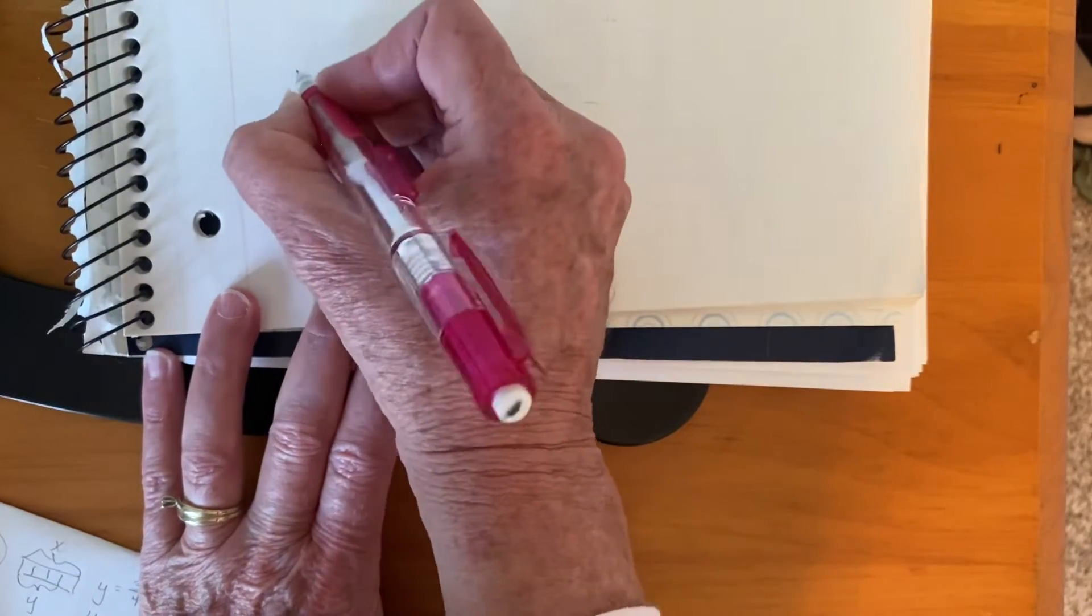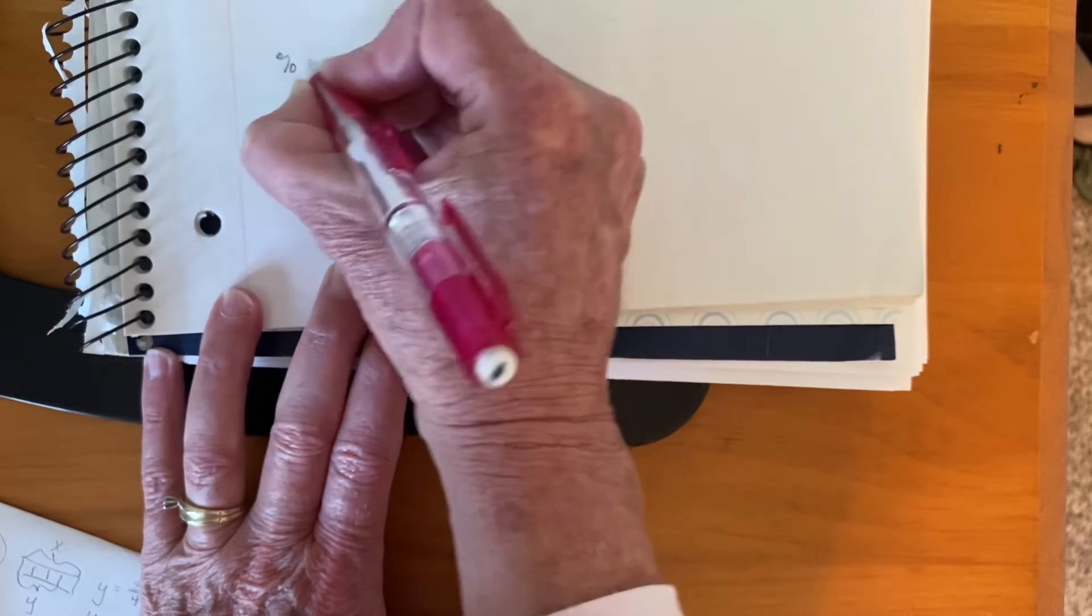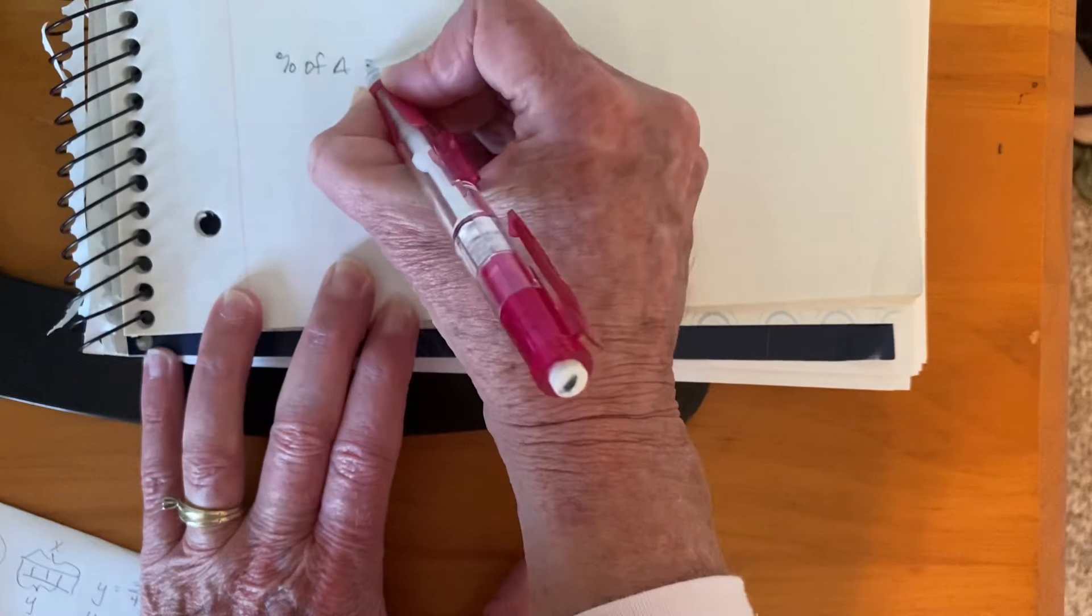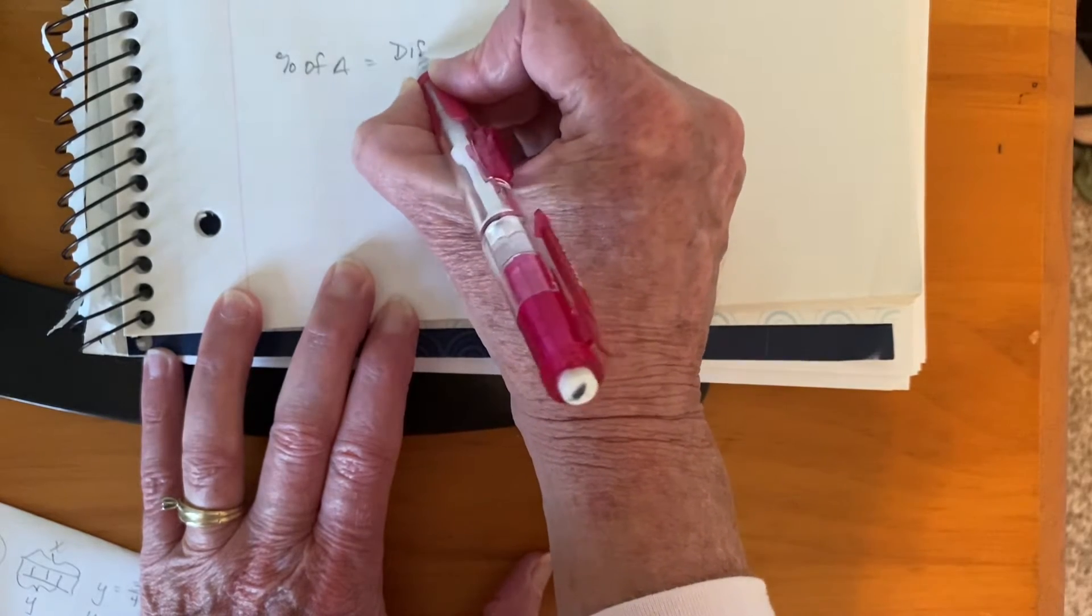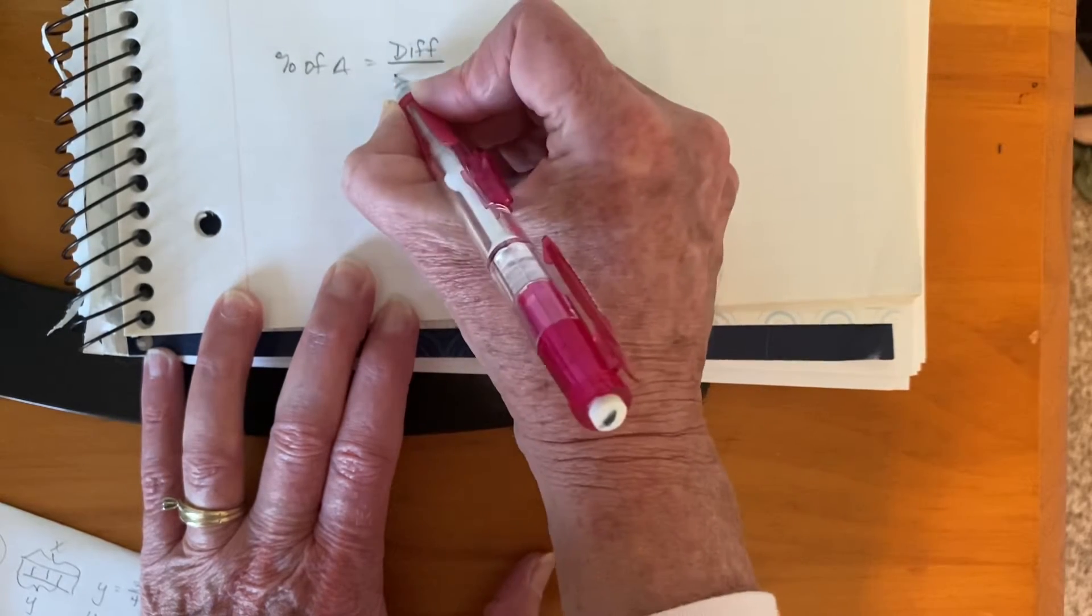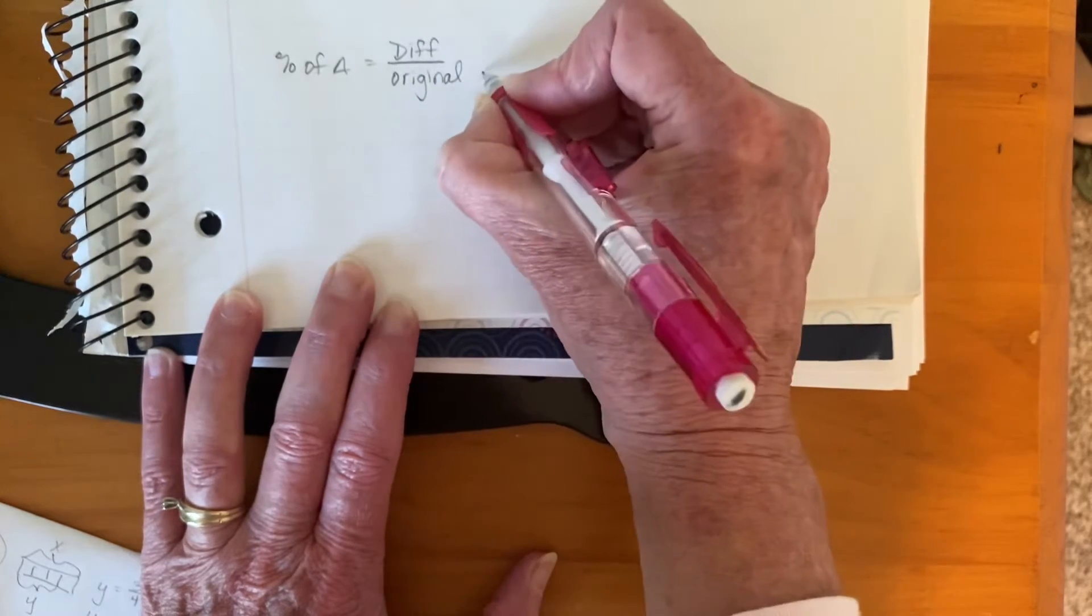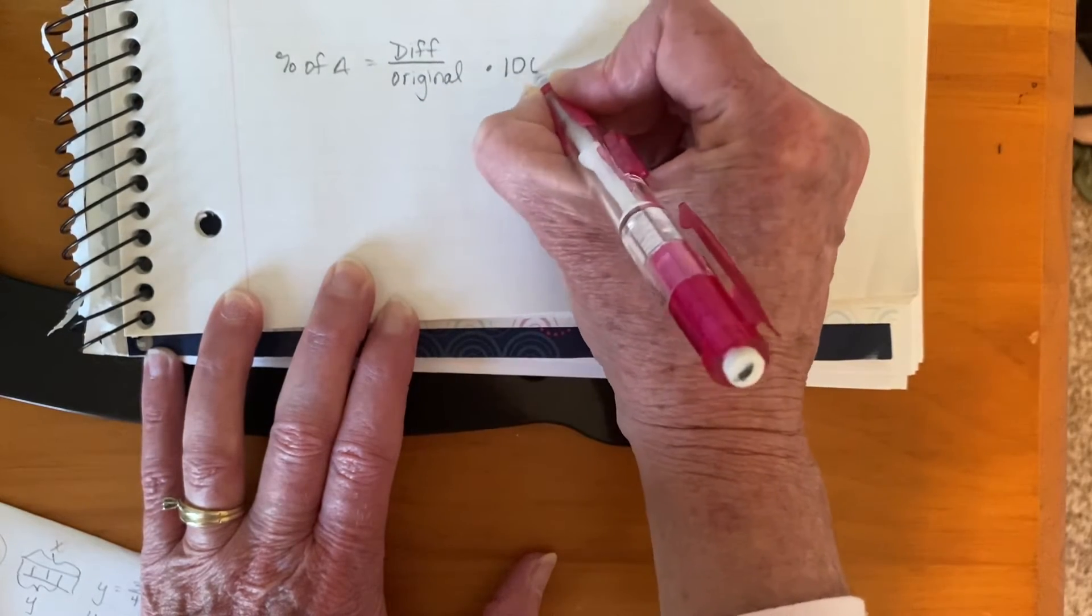So we're going to use that percent of change formula once again. And remember it's the difference between the two prices divided by the original price. And then we multiply by 100 to turn it into a percent.